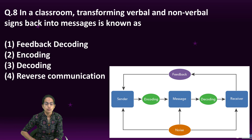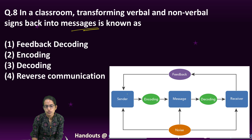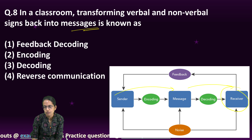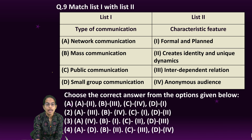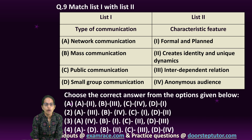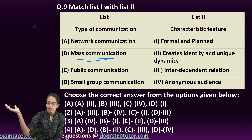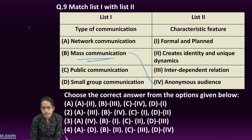In a classroom, transforming verbal and non-verbal signs back into a message is known as decoding. The sender sends the message which is received by the receiver, and at the receiver's end there is decoding of the message — through which signals are sent back, completing the communication cycle. The next question asks who the intended audience is for mass communication. If I run a newspaper and circulate 20 lakh copies, I don't know who will read it — so the audience is anonymous.